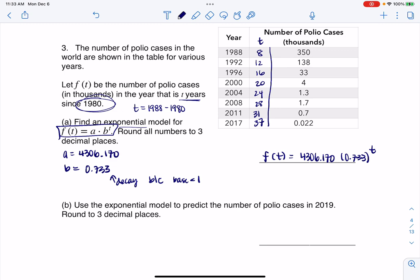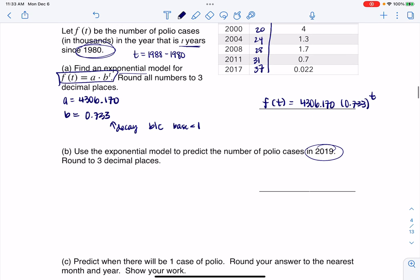It says use this exponential model to predict the number of cases in 2019. I think the biggest error I have seen is students will plug in 2019 right here. You might be thinking, isn't that correct? Not quite. It's on the right track. But the problem is you're plugging in 2019 and not the actual T value. We need the value of T.